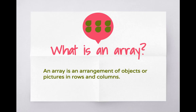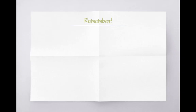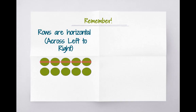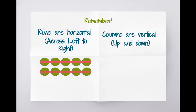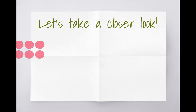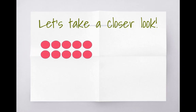Like the image you see here, there are two main parts that make up an array: rows and columns. It's easy to get them confused, but just remember — rows are horizontal, they go across from left to right. Columns are vertical, they go up and down. Now let's take a closer look.